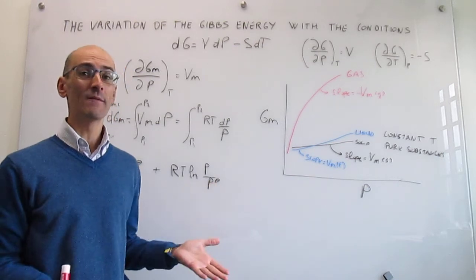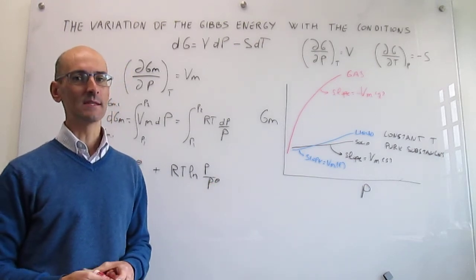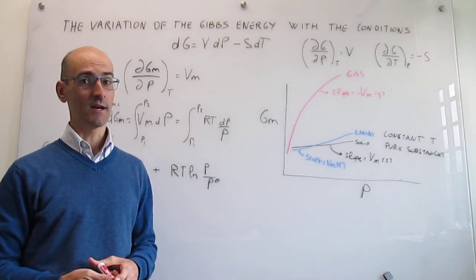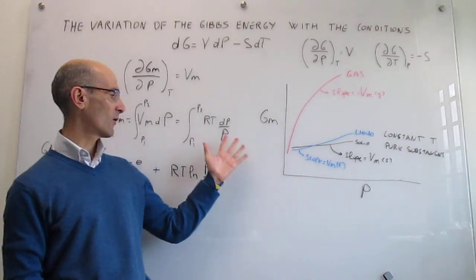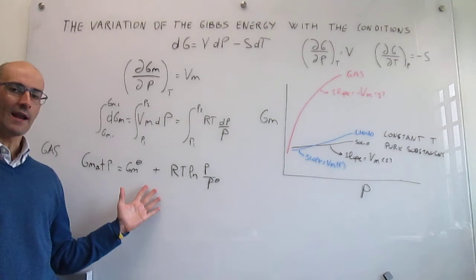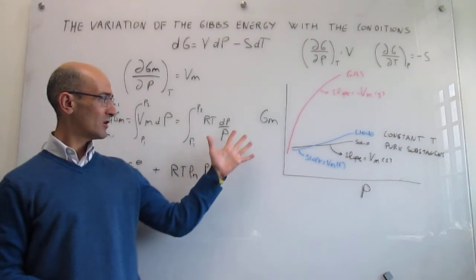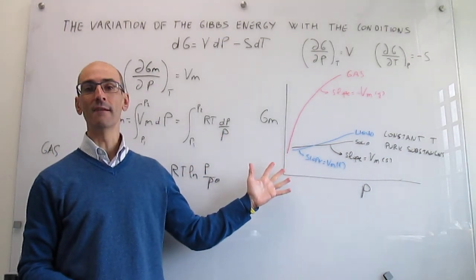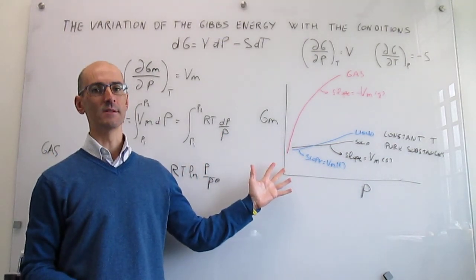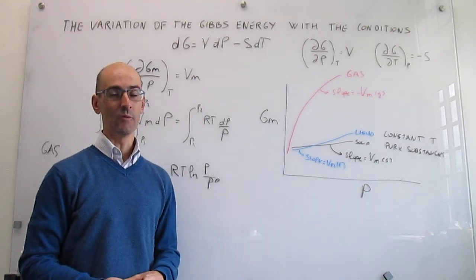In this video, we have seen how the molar Gibbs energy of a pure substance depends on pressure at constant temperature, and we have derived equations that allow you to calculate the explicit dependence of the molar Gibbs energy on pressure. We have also plotted those expressions so you can have a visual representation of that variation of the molar Gibbs energy with pressure.